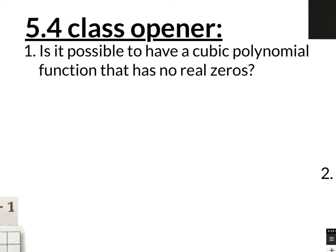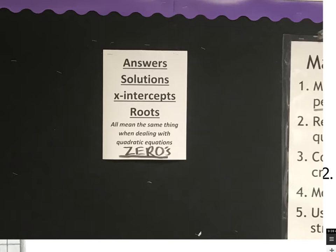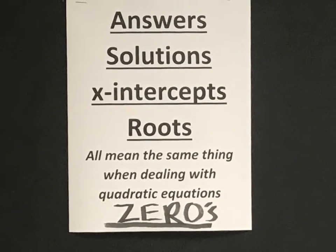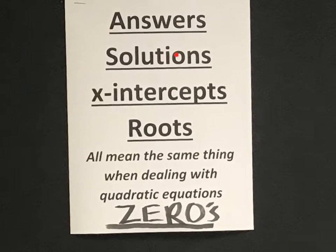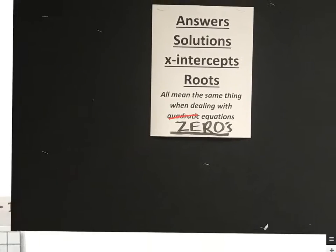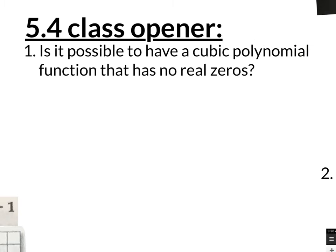Answers — check it out. On the wall, we have this paper that says answers, solutions, x-intercepts, roots — all mean the same thing when dealing with any function, any equation. The zeros are also the same thing. So answers, solutions, roots, zeros, x-intercepts — they're all the same thing. So when they say, is it possible to have a cubic polynomial function that has no real zeros, that does not actually cross the x-axis?